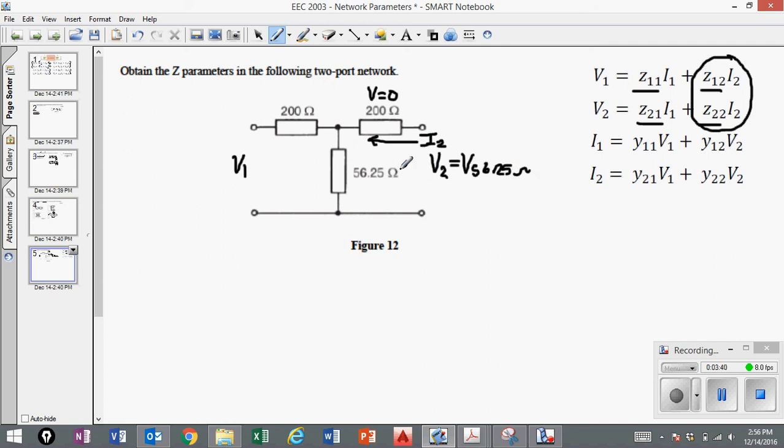So we can conclude that V2 will be the same voltage as the 56.25 ohm resistor. You can literally say that they are virtually in parallel, but not in reality because there's still a 200 ohm resistor here. But virtually they are in parallel because there's no voltage loss between this node and this node. So once we set I2 equal to zero, we can solve for Z1.